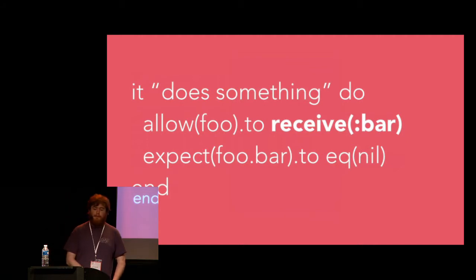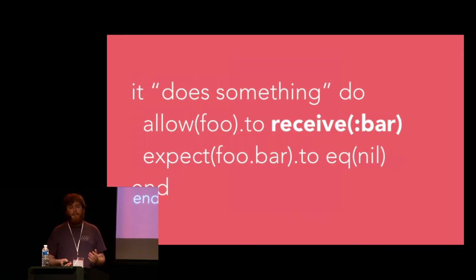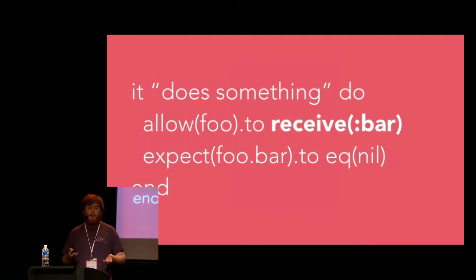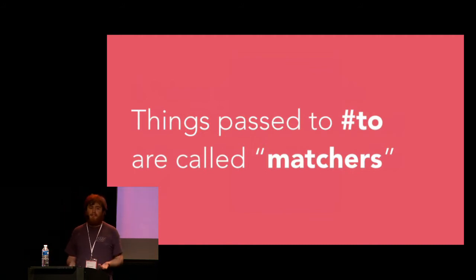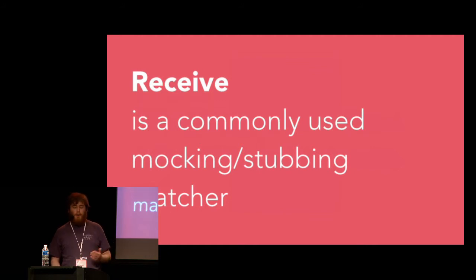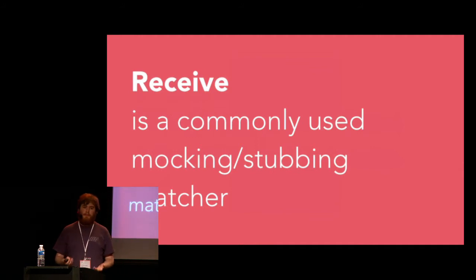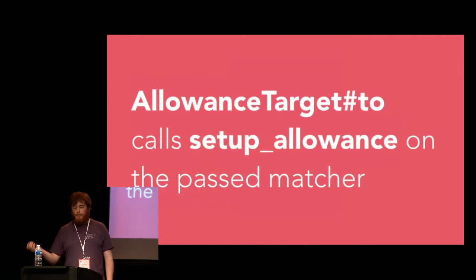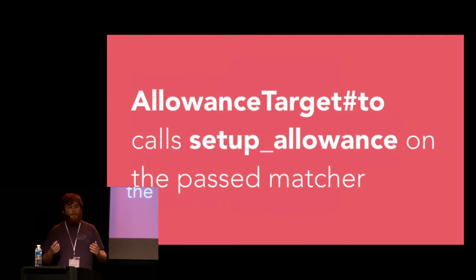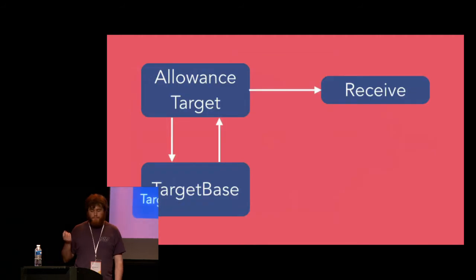In RSpec parlance, the arguments you pass into the to method are called matchers — things like eq and be, and receive is another one. Once the AllowanceTarget has called out to TargetBase and the method is defined, we're done with the allow and to expressions. Now we need to look at the receive part. Receive, like allow, is basically an RSpec convenience function that delegates straight to Receive.new to create a new receive matcher object.